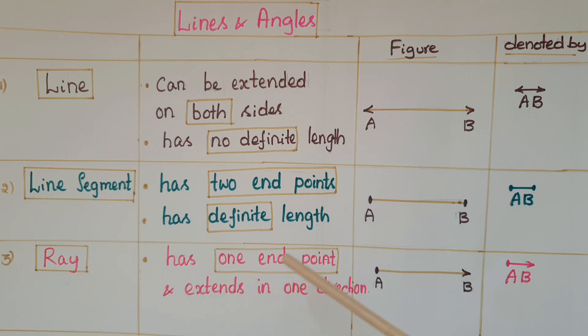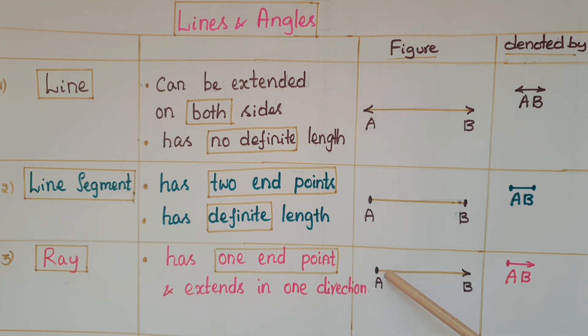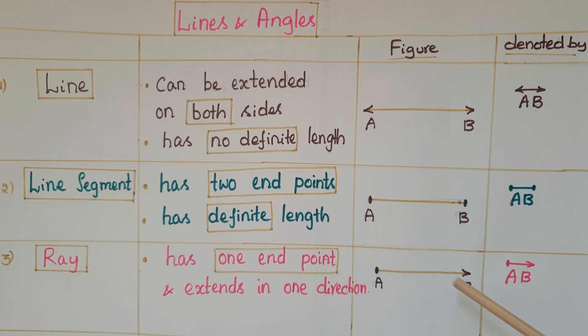Next one is ray. A ray has only one endpoint and extends in one direction. Here, A is the endpoint and it extends in the direction of AB.